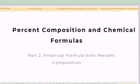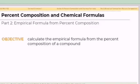Welcome to the General Chemistry 1 class. This section is on stoichiometry, focusing on empirical formulas from percent composition. In this lesson, we will calculate the empirical formula from the percent composition of a compound.